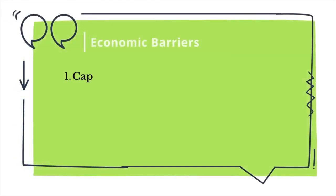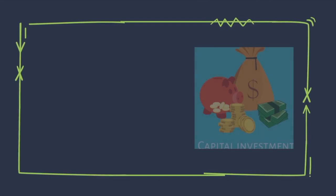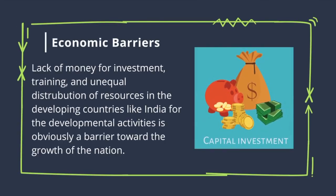The third barrier is the economic barrier, which is also the most important barrier. It covers capital investment, human resources, and unequal distribution of resources. Lack of money for investment and training, and the unequal distribution of resources in developing countries like India, is a clear barrier towards the growth of the nation.